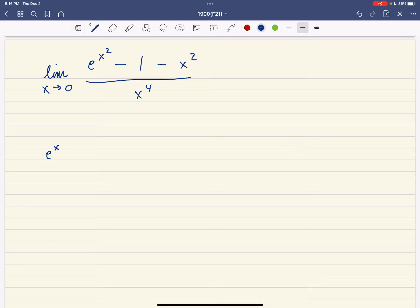Here, e to the x squared we know is, let me write it a little bit differently here. We know e to the t is 1 plus t plus 1 half t squared plus 1 over 3 factorial t cubed and so on. And therefore, e to the x squared is 1 plus x squared plus 1 half x to the 4th plus 1 over 6 x to the 6th plus this would be 1 over 24 x to the 8th and so on.